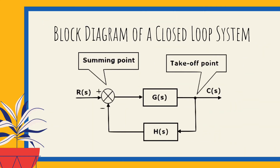Let us consider the block diagram of a closed loop system as shown in the figure to identify these elements. The figure shows a block diagram that consists of two blocks having transfer functions G(s) and H(s). It has one summing point and one takeoff point. The arrows indicate the direction of the flow of signals. Let us now discuss these elements one by one.